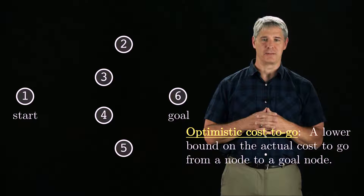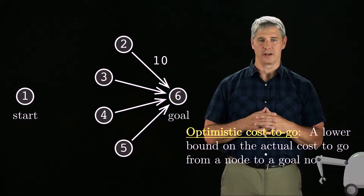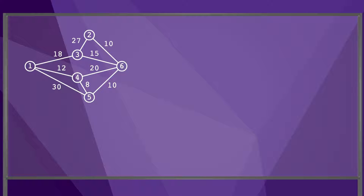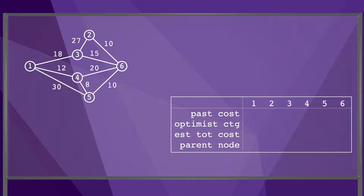This straight-line distance is fast to evaluate and guaranteed to be optimistic. For node 1 of our example, the optimistic cost-to-go is 20, and for nodes 2 through 5, the optimistic cost-to-go is 10. With this as background, we can begin the search process. Let's create a table to keep track of our progress. The columns correspond to nodes 1 through 6. The past cost refers to the cost of the best-known path to each node. Since node 1 is the start node, its past cost is zero. The past cost for all other nodes is infinity, since we don't know yet if there is a path to any of them. The optimistic cost-to-go is 20 for node 1, 10 for nodes 2 through 5, and zero for node 6, since it is the goal. The estimated total cost is the sum of the past cost plus the optimistic cost-to-go.